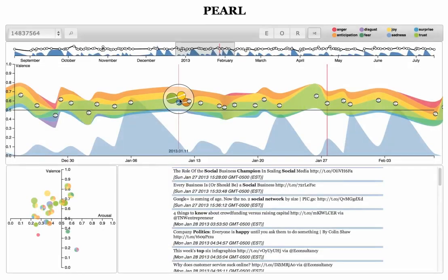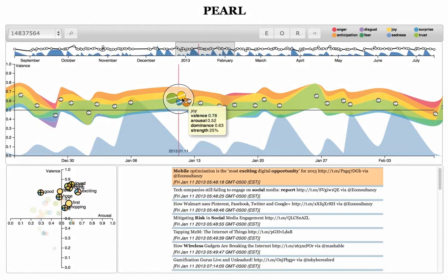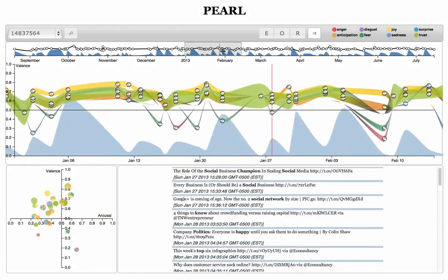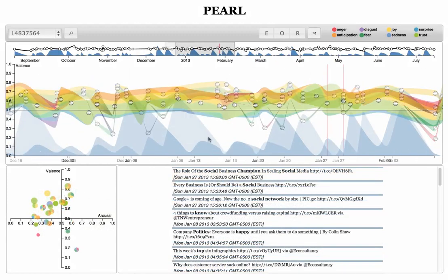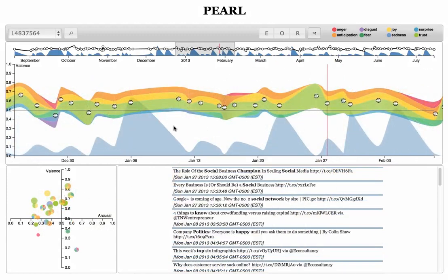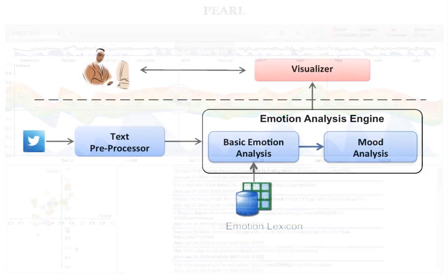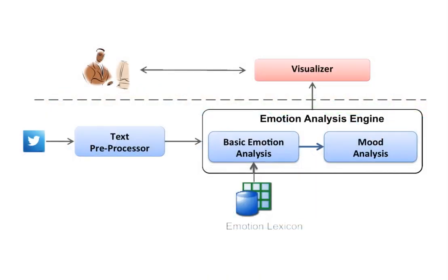We present PEARL, a web-based visual analytics tool for interactive exploration of personal emotion timelines based on social media data. PEARL incorporates a set of analytical models that systematically detects a user's emotions from tweets, as well as interactive visualizations that summarize the emotion profiles.